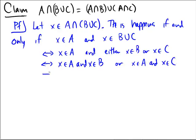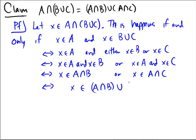But that would only happen if x was in A intersect B or if x was in A intersect C. But notice that happens if and only if x is in A intersect B union A intersect C.